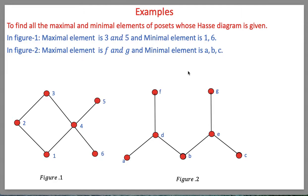We have Hasse diagrams of some posets, and we need to find the maximal and minimal elements. In figure one, the Hasse diagram shows a poset consisting of elements 1, 2, 3, 4, 5, and 6. Clearly, 3 and 5 are the maximal elements of this poset, and 1 and 6 are the minimal elements. An element a is maximal if there is no element c such that a is less than or equal to c.